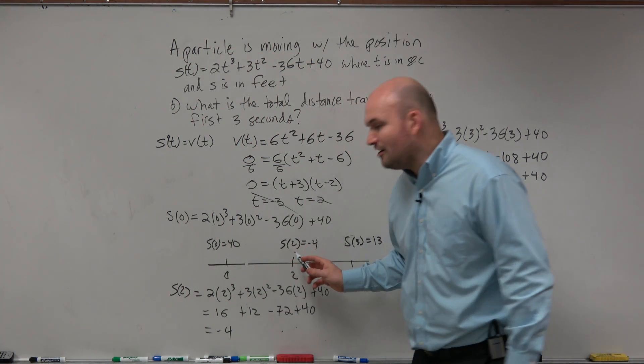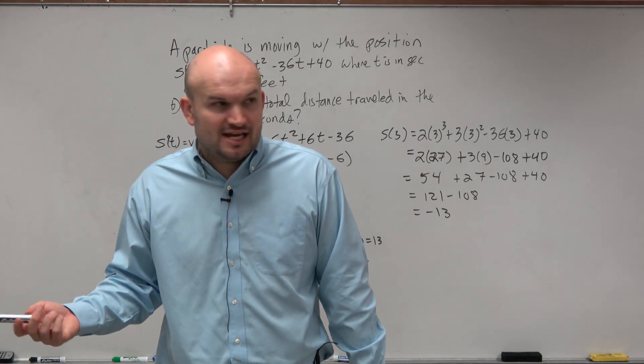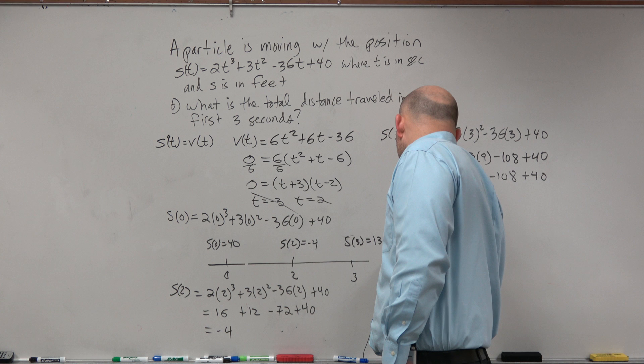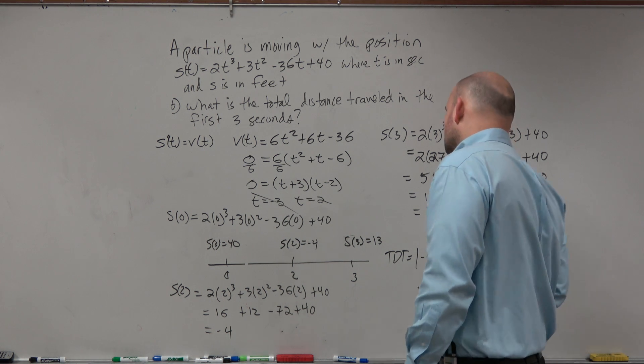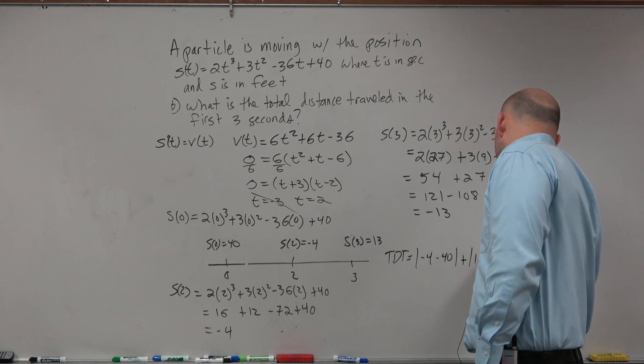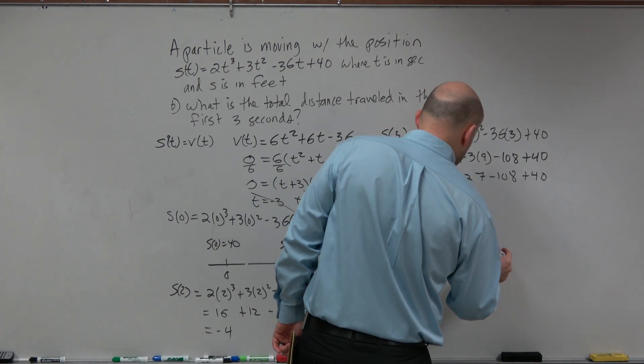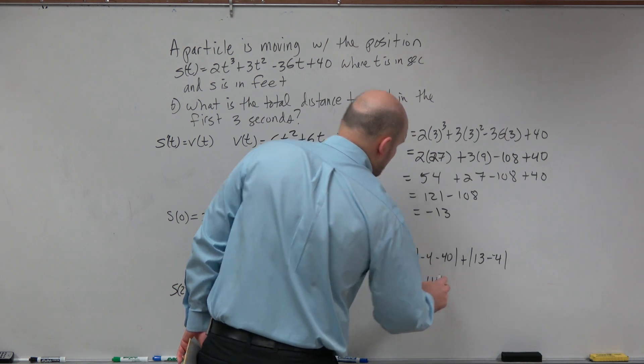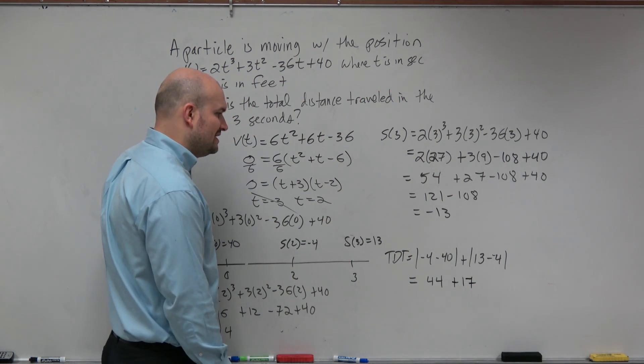So now what we need to do is then find how far did it travel from s of 0 to s of 2? How far did it travel? And all we're trying to do is just find the displacement, just find the change. But again, we're trying to find the absolute value. We're not looking for if it's negative or positive. So the total distance traveled is going to be the absolute value of negative 4 minus 40 plus absolute value of 13 minus negative 4. So negative 4 minus 40 is going to be absolute value of that is 44. And 13 minus a negative 4 is going to be 17.